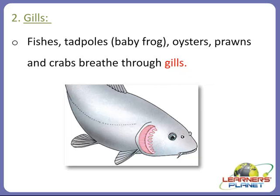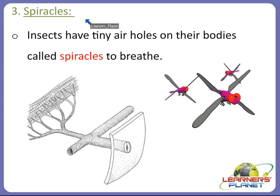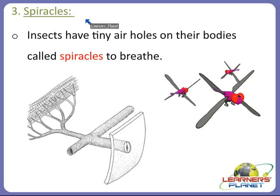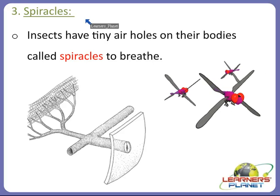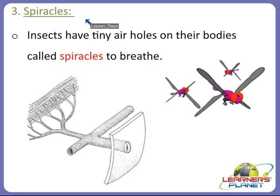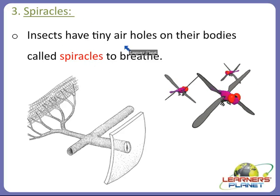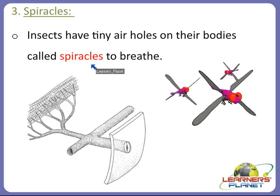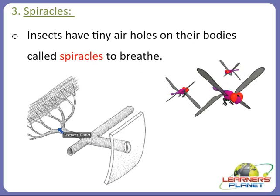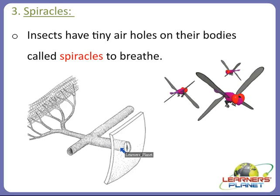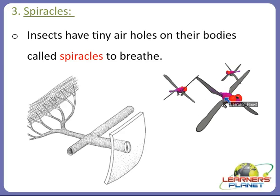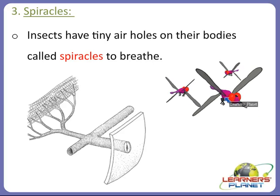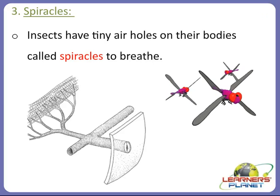Another organ for breathing is spiracles. Spiracles are a series of tiny holes present along the sides of some animals' bodies. Insects have tiny air holes on their bodies known as spiracles to breathe. As you can see in this picture, this is a very close view of spiracles present in an insect — the tiny holes along their sides through which they are able to respire.